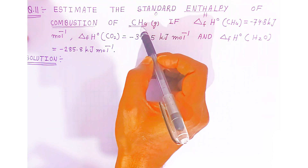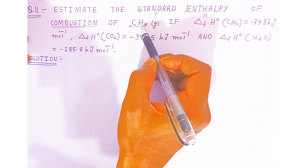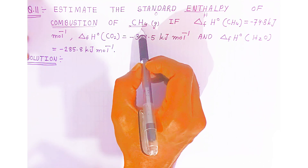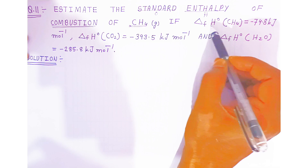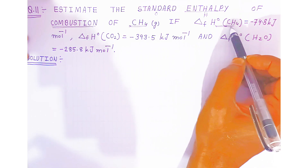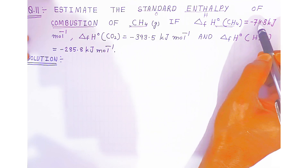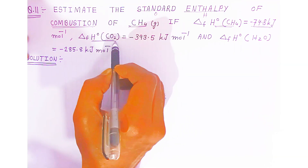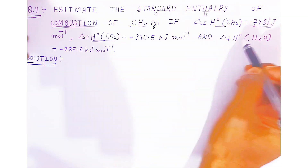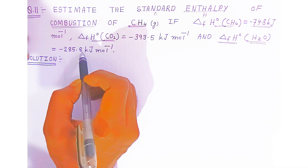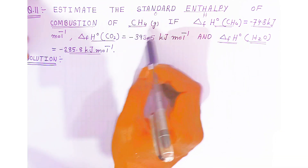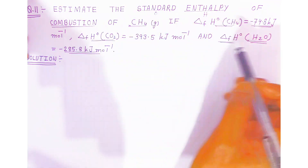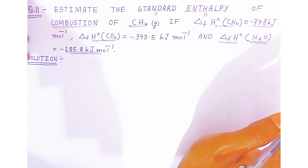When methane burns in the presence of air — which contains mostly oxygen — on oxidation it gives carbon dioxide and water. You have to write the reaction. The standard enthalpy of formation of methane gas is given as minus 74.8 kJ/mol, carbon dioxide is minus 393.5 kJ/mol, and water is minus 285.8 kJ/mol.